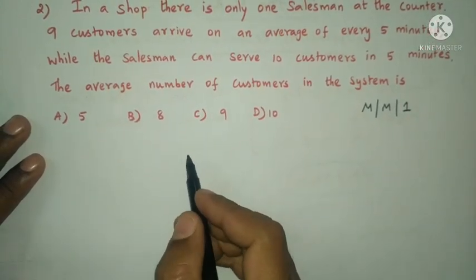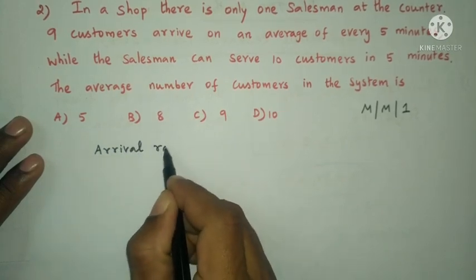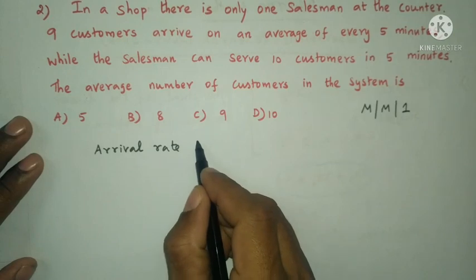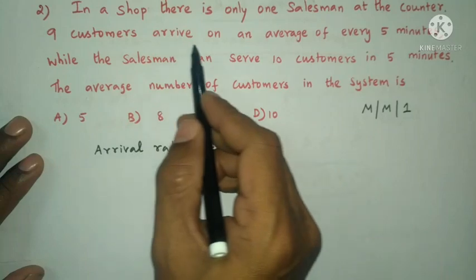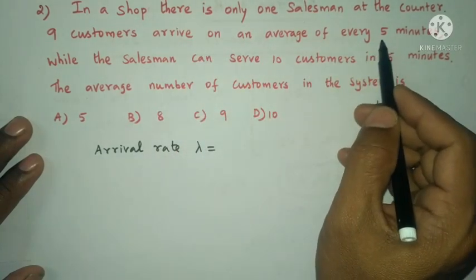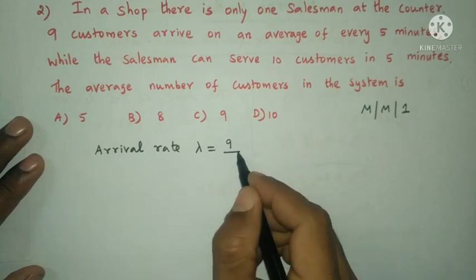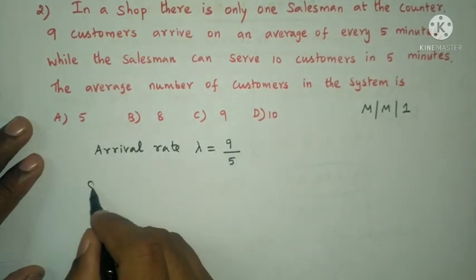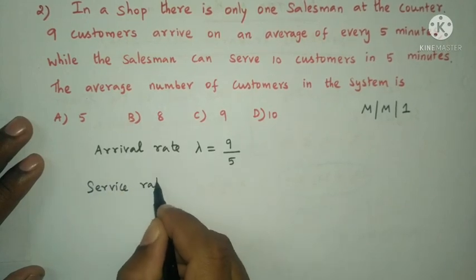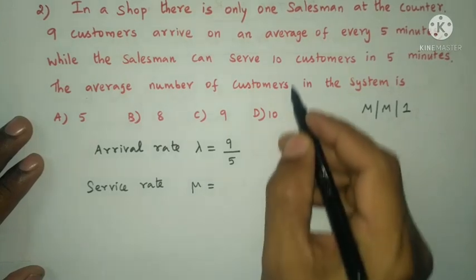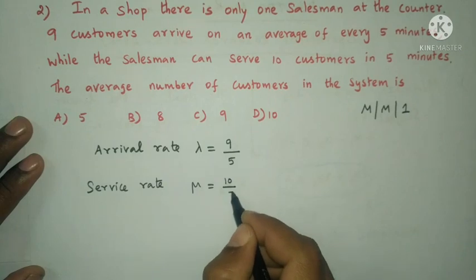First, the arrival rate: lambda equal to 9 customers per 5 minutes, that is 9 by 5. The service rate: mu equal to 10 customers per 5 minutes, that is 10 by 5.